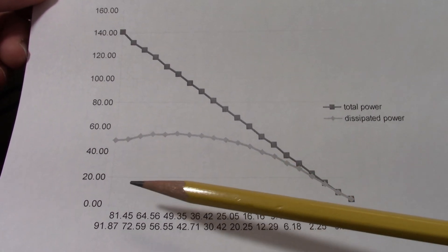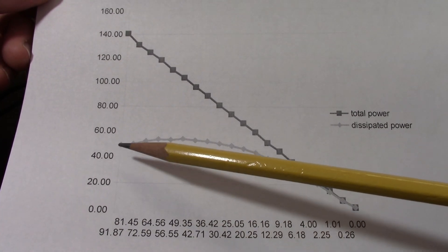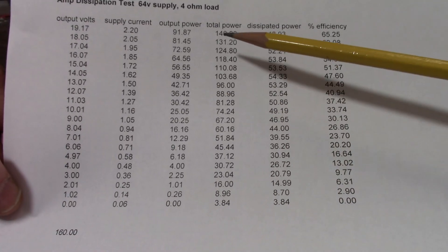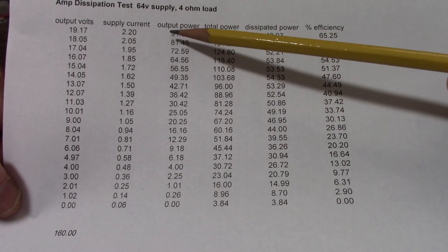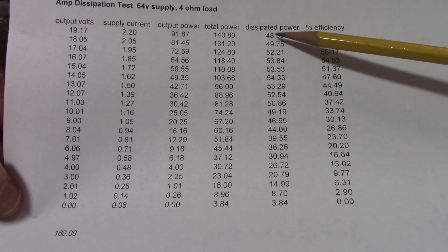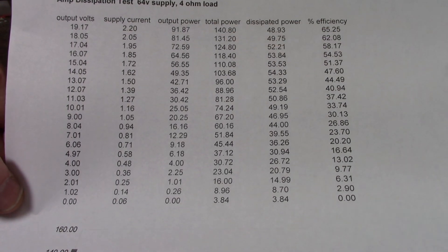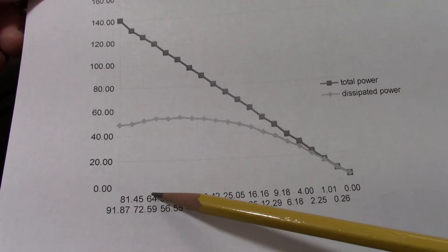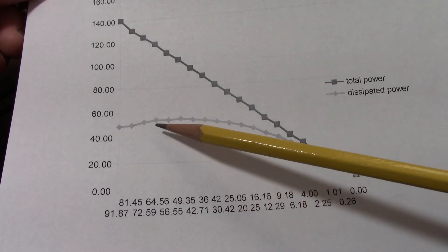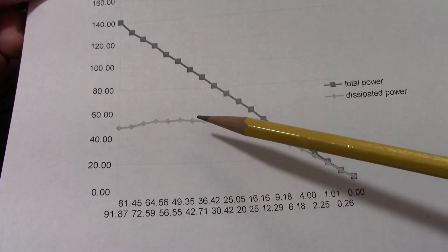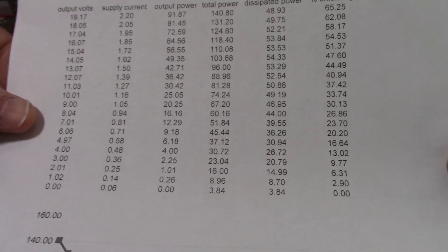But look what happens at the max output power - about 92 watts we're dissipating about 49 watts. See here, it's about 92 and dissipating just about 49 watts total power 140. But as I lower the signal, see what happens to the dissipated power. So the dissipated power, it actually creeps up, it actually creeps up and it peaks at some level and starts to drop again.